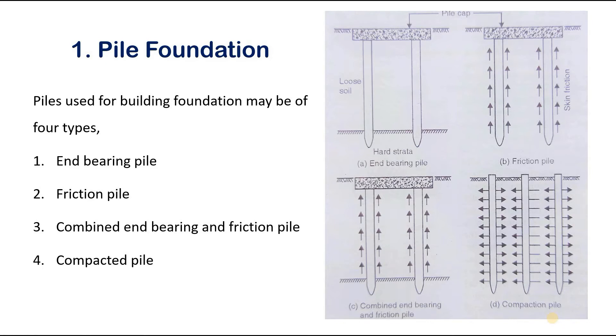Next is compacted piles. These compacted piles are used to compact loose granular soils, thus increasing their bearing capacity. The compacted piles themselves do not carry a load. They use timber, bamboo sticks, or sand as a medium to transfer the load.